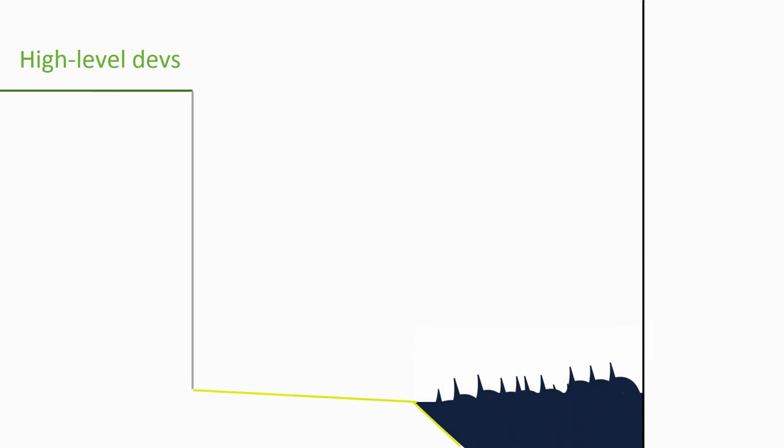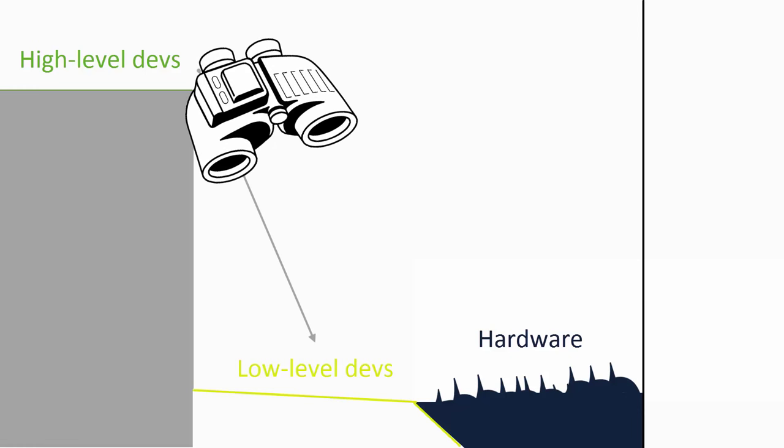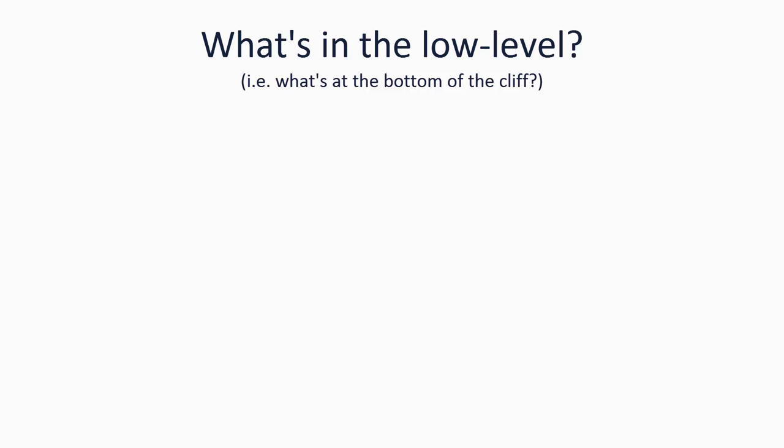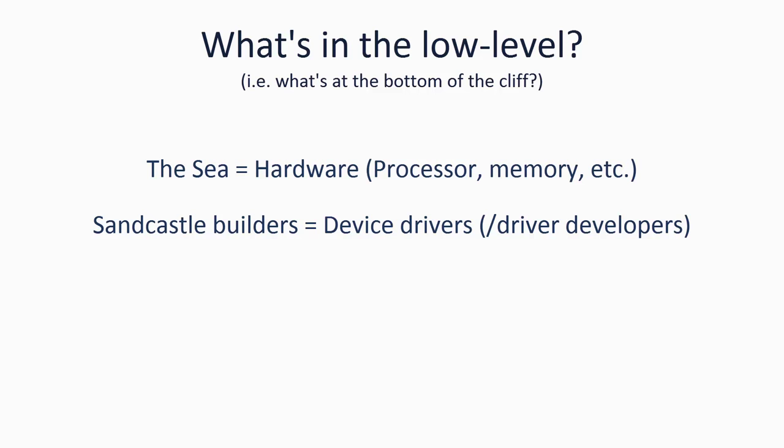Going back to our cliff analogy for the last time, let's imagine our high-level developers look over the edge of the cliff with binoculars. What they would see is three main things. First, the sea — in our analogy, this is the hardware — consisting of the processor, along with memory, possibly a graphics processor, and various other bits. They would then see the device driver developers, each on the beach building their own sandcastle in their own little patch using buckets of seawater from their designated area, ignoring each other and all other developers. If they needed extra sand, they would ask the kernel developer. Essentially, each device driver is almost completely independent and knows nothing of the others — they can only get extra resources or information by asking the kernel developer.